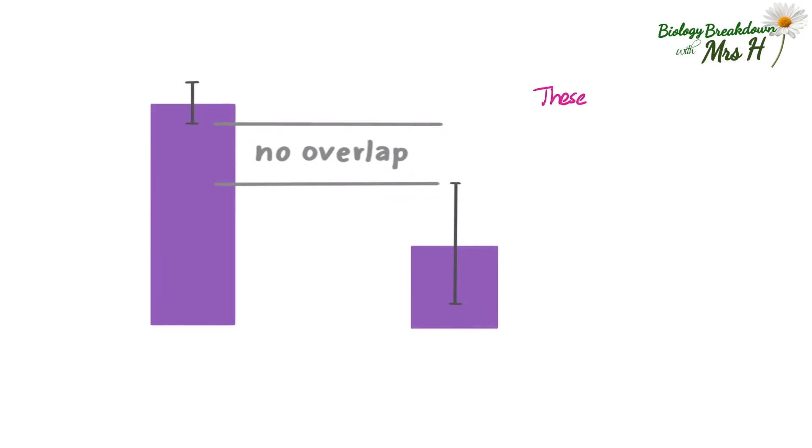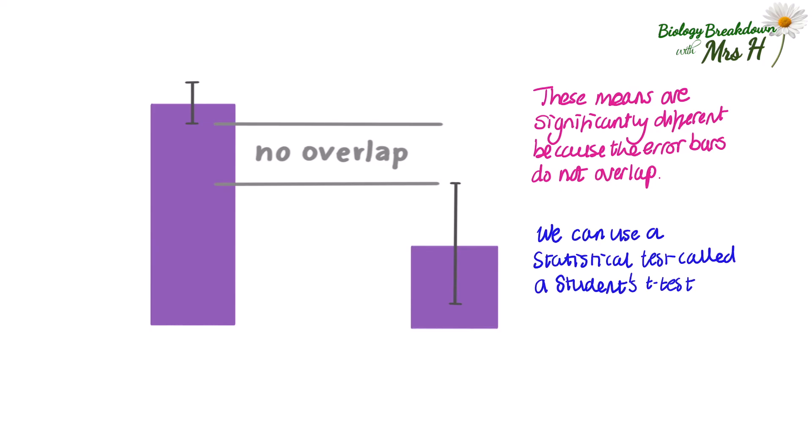If we look at a different example these means are significantly different because the error bars do not overlap. To determine the level of significance we can use a statistical test called a student's t-test. But that is a different video that you will be able to find on my youtube channel. I'll put a link in the description.